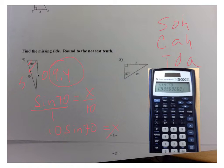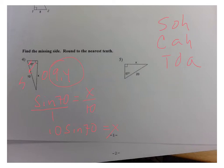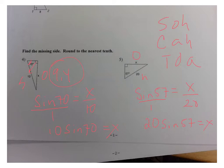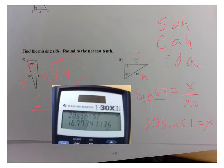The next question is also asking us to find a missing side using sine. Stop the video and try this problem yourself — it's just like the one I just did — then come back and watch my answer. This is the opposite side, this is the hypotenuse. I write the sine of 57 equals X over 20. The cross-product is 20 times the sine of 57, which equals X. I typed 20 times the sine of 57 into my calculator, which found the sine of 57, then multiplied by 20. The length of this side is 16.8.